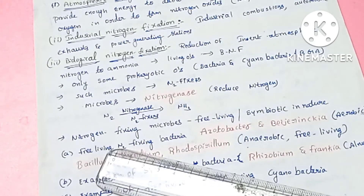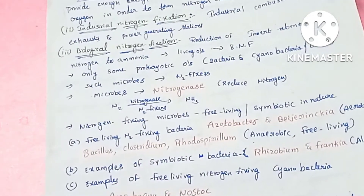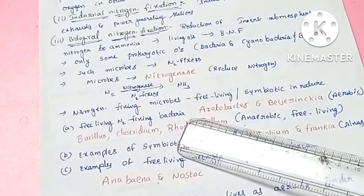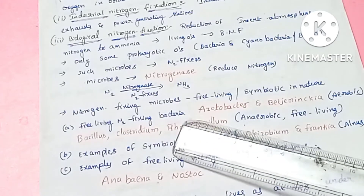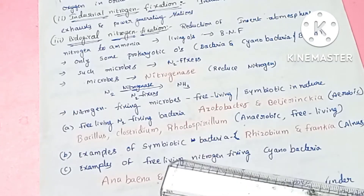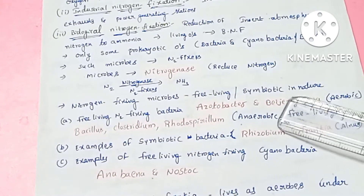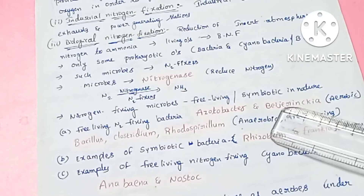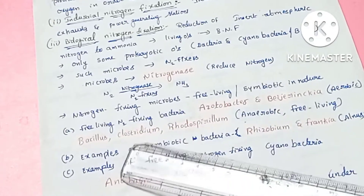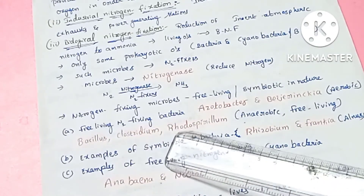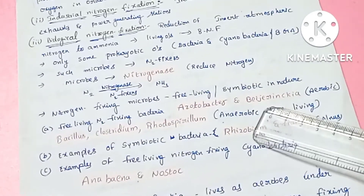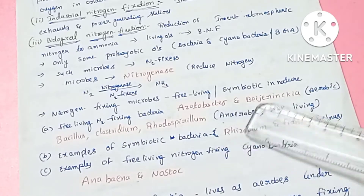Nitrogen-fixing microbes are found in the soil. Soil organisms can be free-living. Free-living nitrogen fixers exist freely in the soil. There is also symbiotic association with nitrogen fixation. Free-living nitrogen-fixing bacteria include Azotobacter and Beijerinckia. These two are aerobic organisms that fix atmospheric nitrogen.